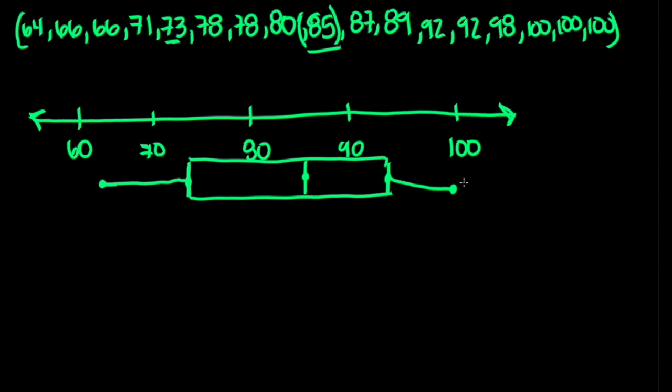This is what a box and whisker plot looks like for this set of numbers. In a box and whisker plot, the box encloses the middle half of the distribution and the whiskers indicate the spread of data throughout the lowest and highest fourths of the distribution. The distance between these two extreme points represents the range of the distribution.